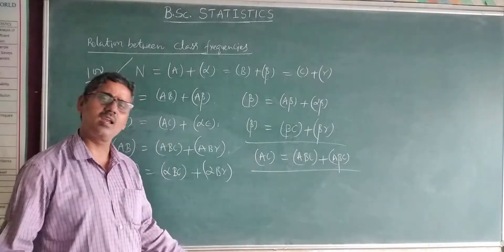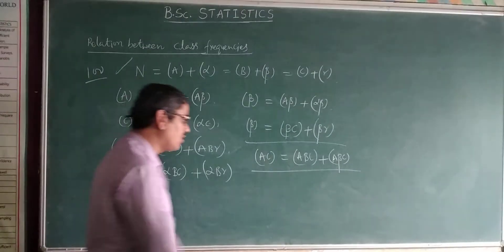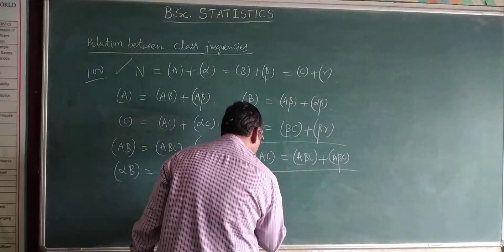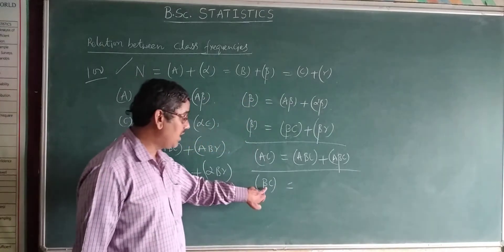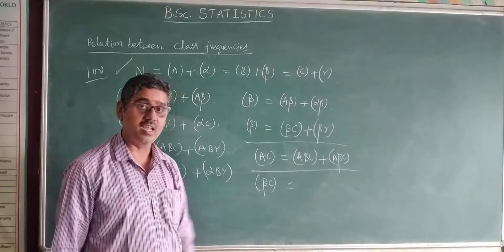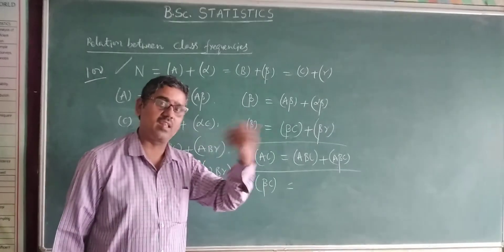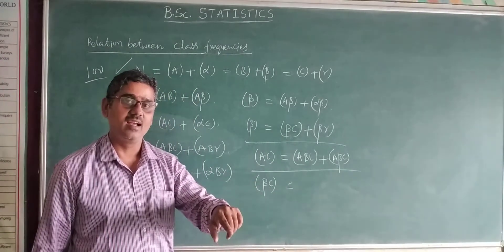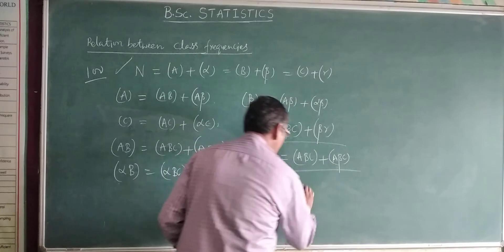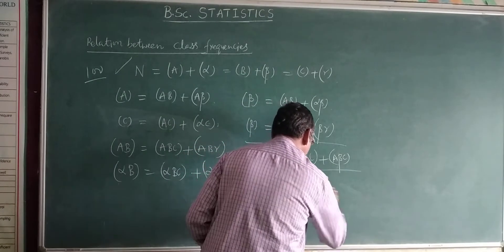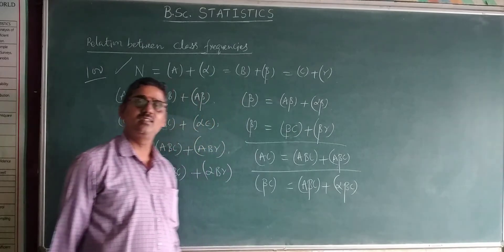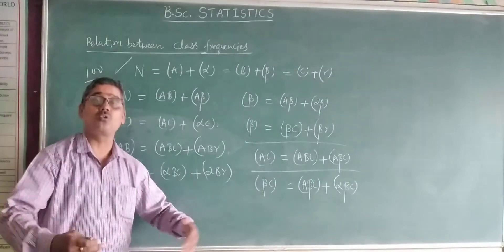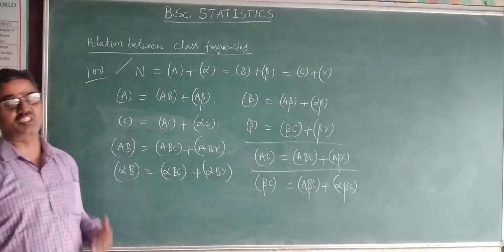Similarly, you can consider anything. For example, I consider now beta C. That is beta belongs to the attribute B and C. Those are two attributes. Another attribute you want to express, A. You consider A beta C plus alpha beta C. Do you understand this? This is how to express the formulas.